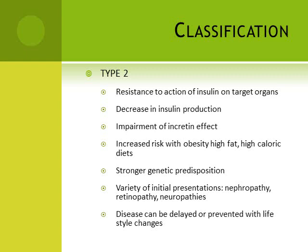Type 2 disease is primarily due to resistance to the action of insulin. Initially in these patients the amount of insulin in the body is higher than normal, to compensate for insulin resistance in target organs. Gradually that amount starts decreasing due to overproduction and burnout of the beta cells, leading to decreased insulin production. Impairment of the incretin effect is also an important factor. Increased risk is associated with obesity, high-fat, high-caloric diets.